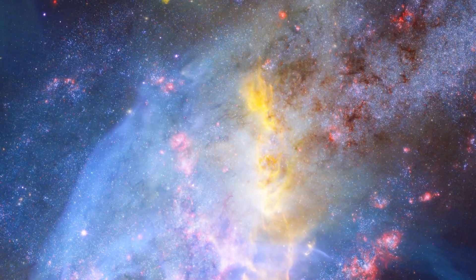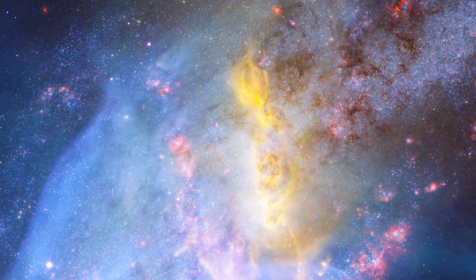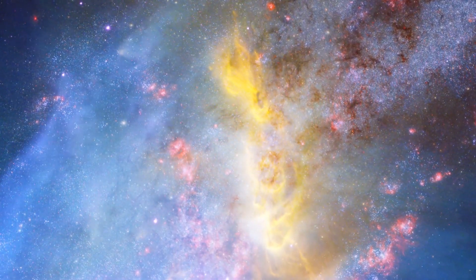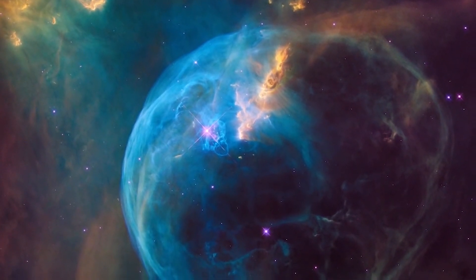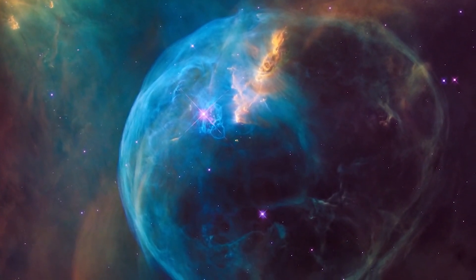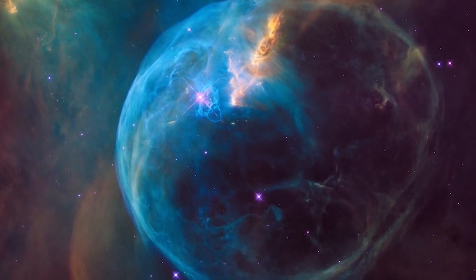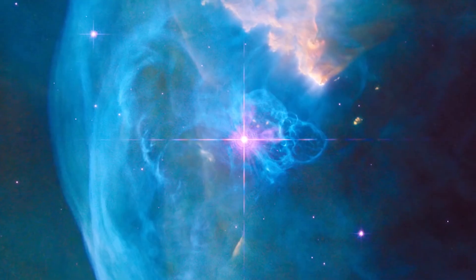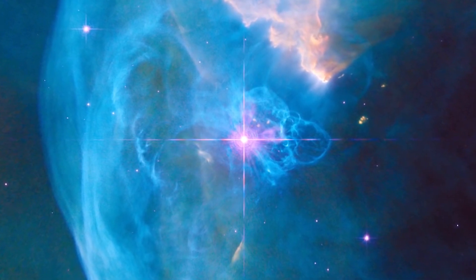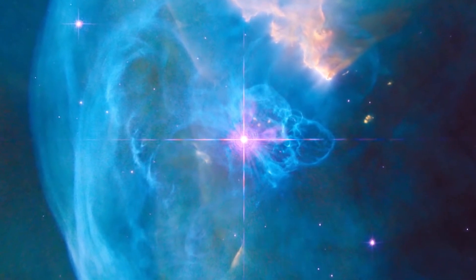This outflow sweeps up the cold interstellar gas in front of it, forming the outer edge of a bubble much like a snowplow piles up snow in front of it as it moves forward. As the surface of the bubble shell expands outwards, it slams into dense regions of cold gas on one side of the bubble. This asymmetry makes the star appear dramatically off-centre from the bubble.